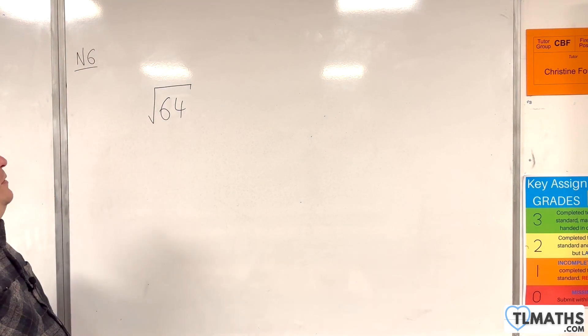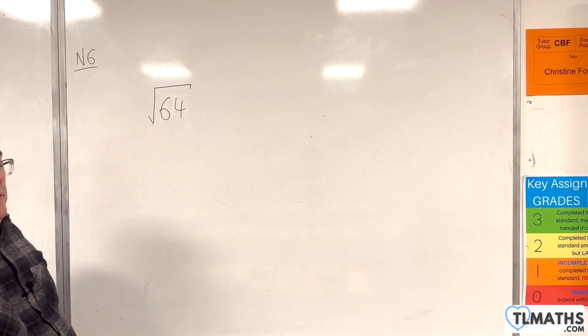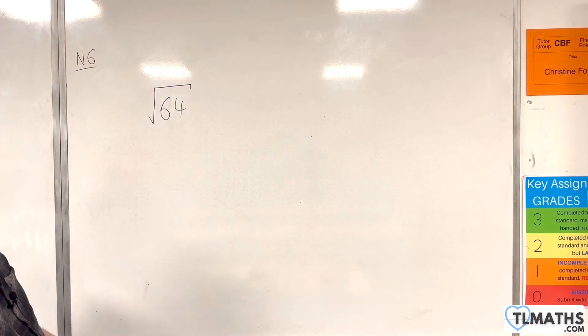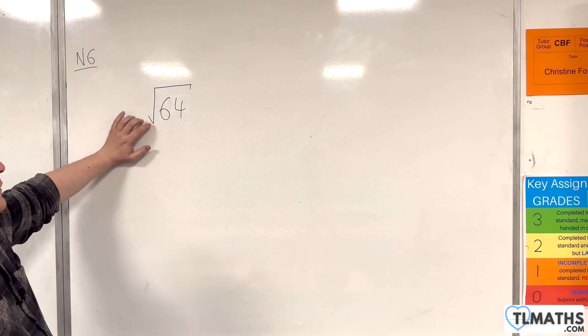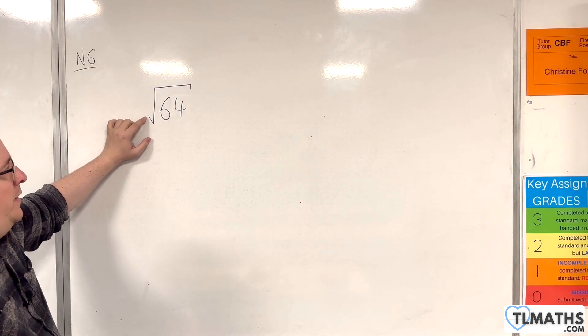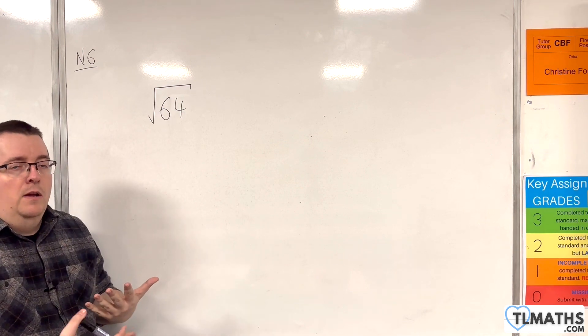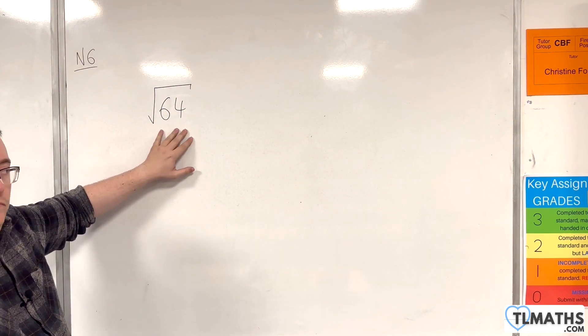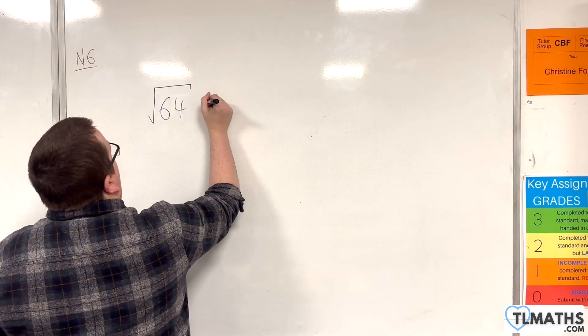When we've been doing short multiplication or long multiplication, depending on which one you've learnt. But it has this little tail on the end. And what this means is, what number multiplied by itself makes 64? And that number is 8.